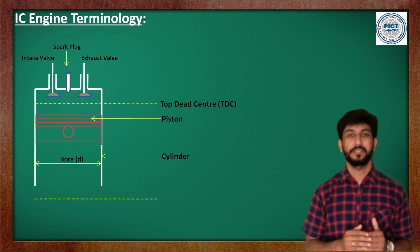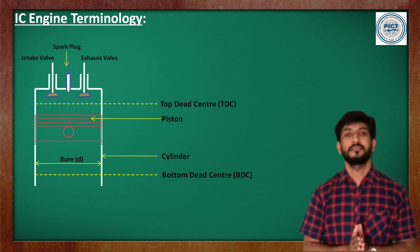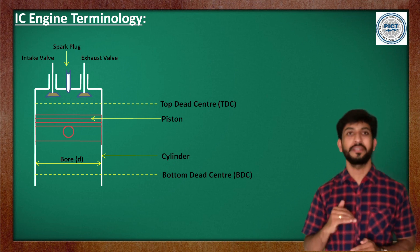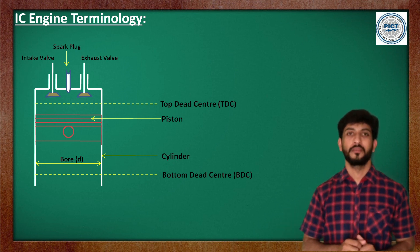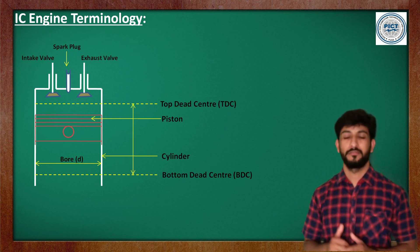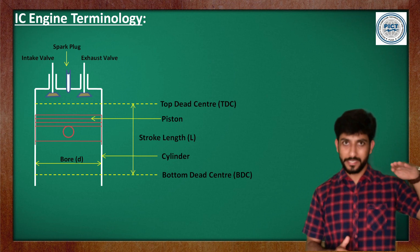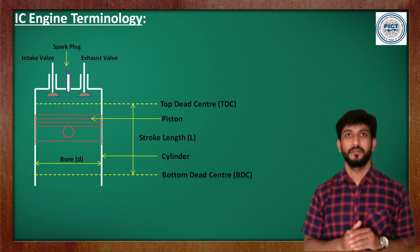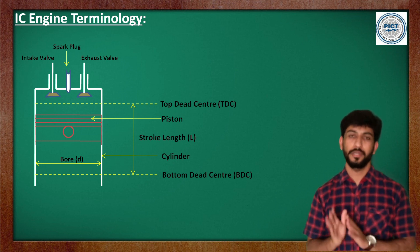The next term is bottom dead center. When the piston is at the extreme bottom position, it is called the bottom dead center. These are two very important terms — top dead center (TDC) and bottom dead center (BDC). Related to these, the next term is stroke. Stroke is the movement of the piston from TDC to BDC, or from BDC to TDC. That is called the stroke of the reciprocating IC engine.